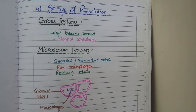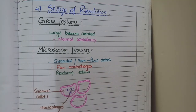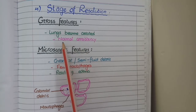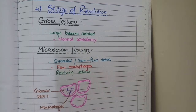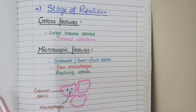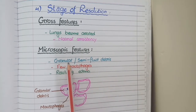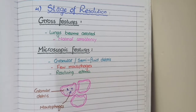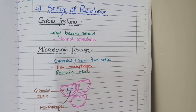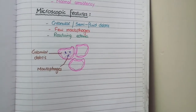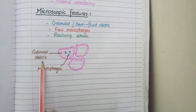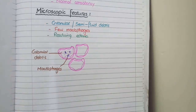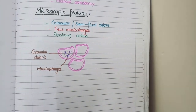The last stage of lobar pneumonia is the stage of resolution, in which the edema resolves. The lungs become aerated or air-filled again and the texture of the lungs returns to normal. On microscopic view, you see resolving edema with degenerated granular debris, some of which usually gets expectorated through sputum. By this stage, a few macrophages are also present in the alveoli. Their duty is to clear up all the waste by phagocytosis. Once resolution is completed, the lungs and alveoli return to a very normal structure.